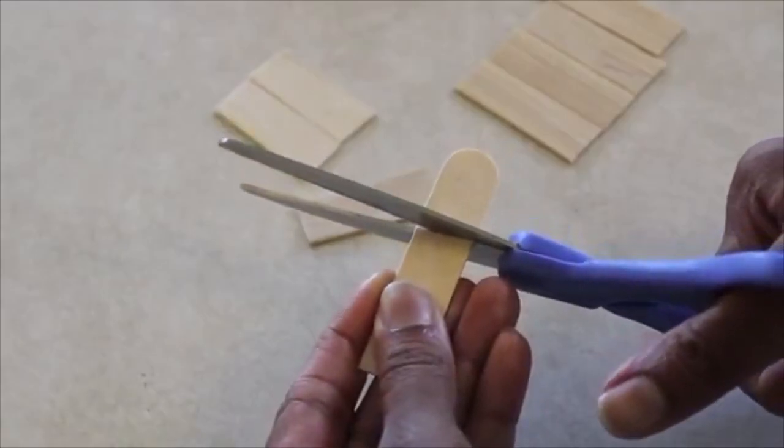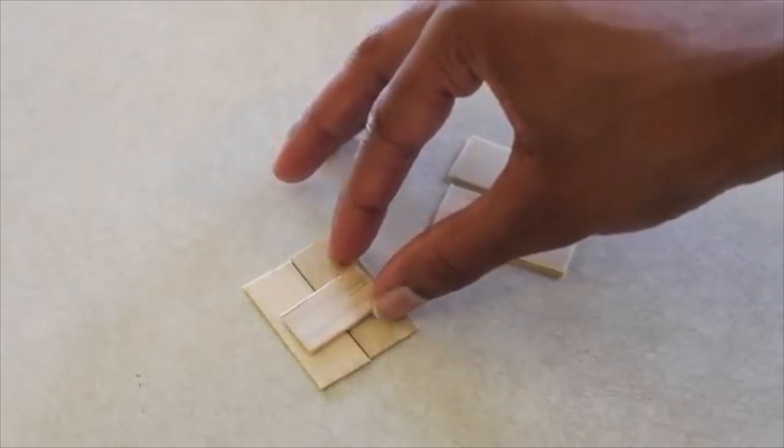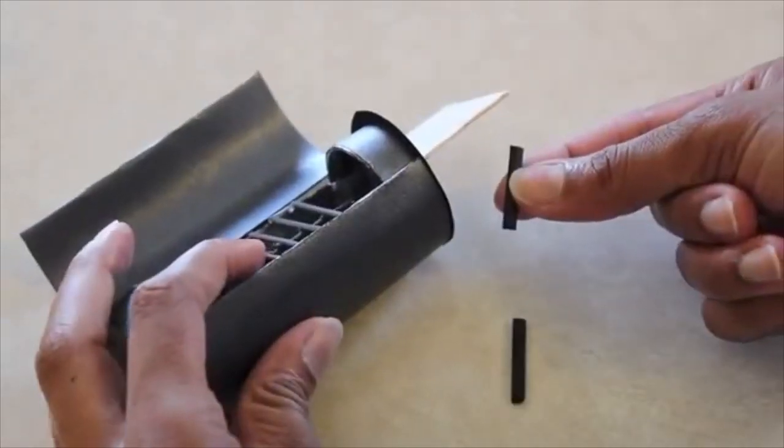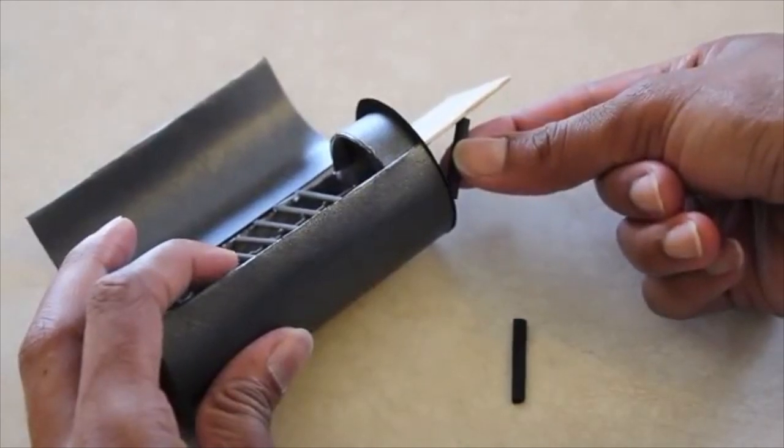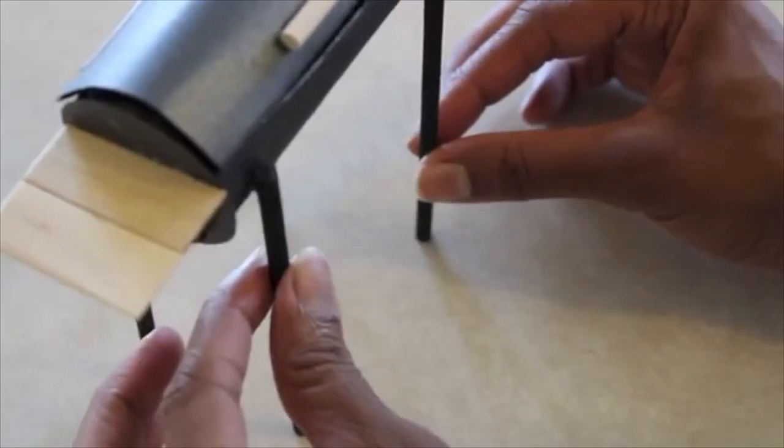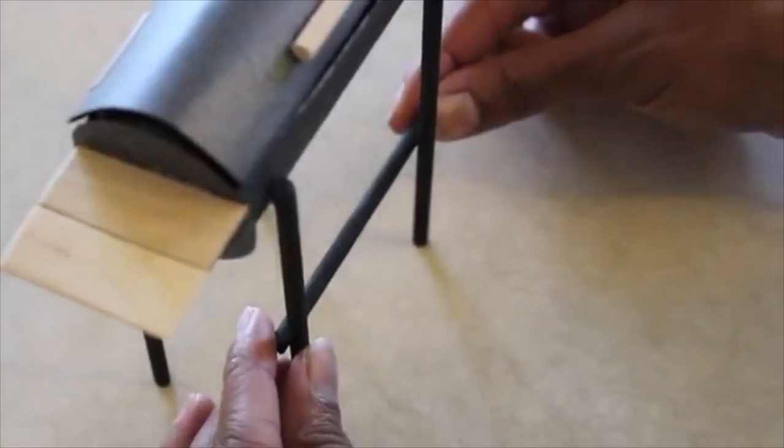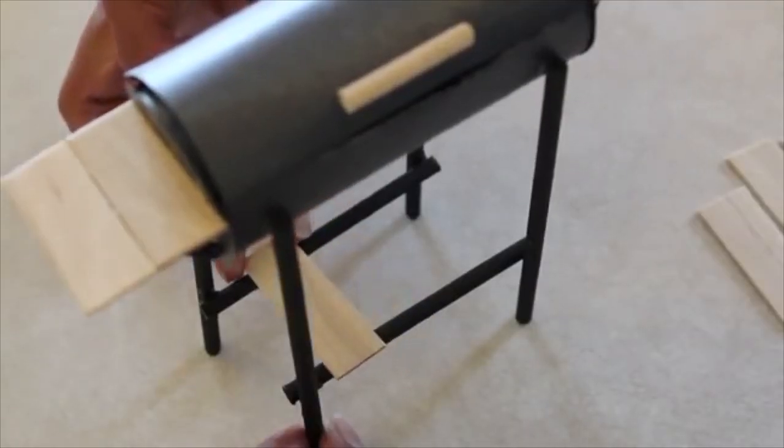Cut popsicle sticks. Glue them together. Glue them to the sides. And glue small pieces of painted wooden dowels underneath to support them. Glue four wooden dowels on for legs. Glue another wooden dowel on the inside to brace them. Glue cut pieces of popsicle sticks onto the beams.